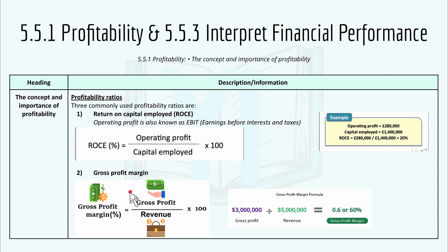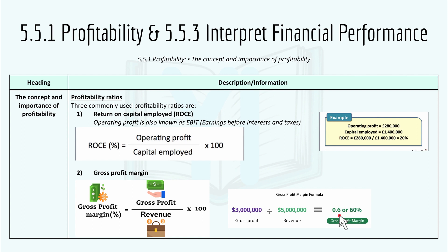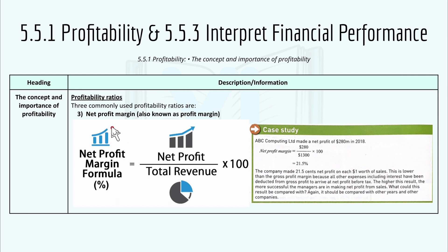Number two is the Gross Profit Margin: Gross Profit ÷ Revenue × 100. For example, £3,000,000 ÷ £5,000,000 × 100 = 60% gross profit margin, or 0.6 in non-percentage form. Number three is the Net Profit Margin, also known as the profit margin: Net Profit ÷ Total Revenue × 100. For example, £280,000 ÷ £1,300,000 × 100 = 21.5%.